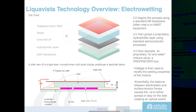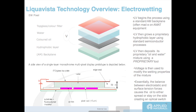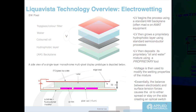The technology starts with an amorphous silicon backplane — same as LCD — that's driving your device. Then you grow a proprietary hydrophobic layer using standard semiconductor processing. It's actually a photoresist-type material that you grow and then pattern to make what look like little crater-type structures — and I'll explain why you do that in a second.